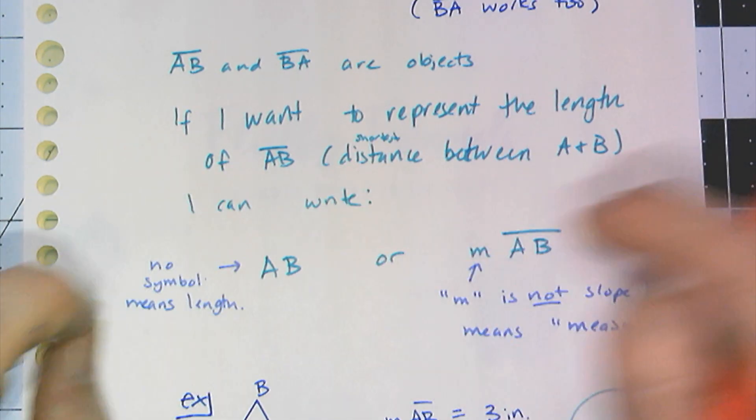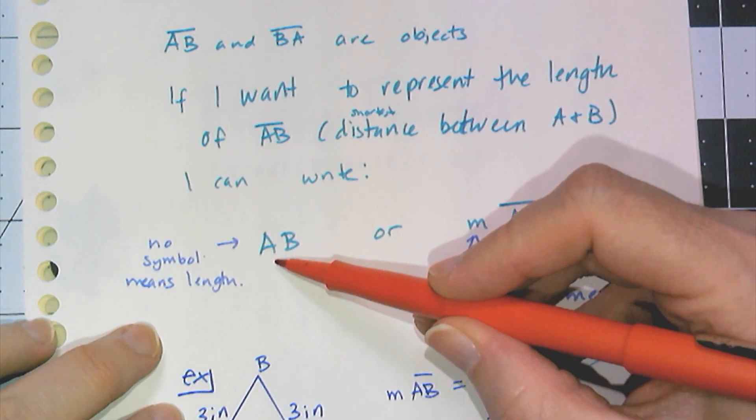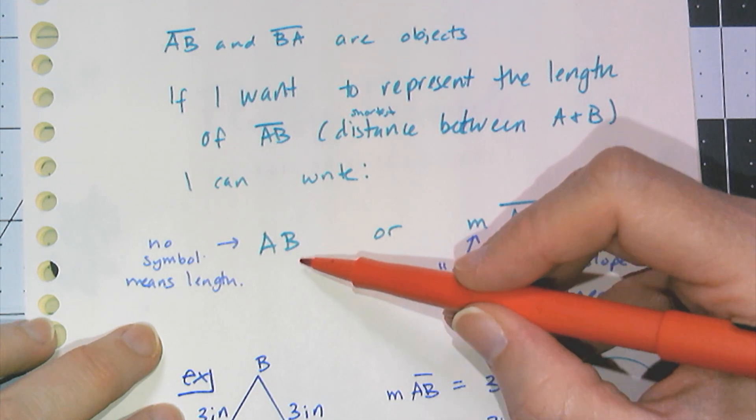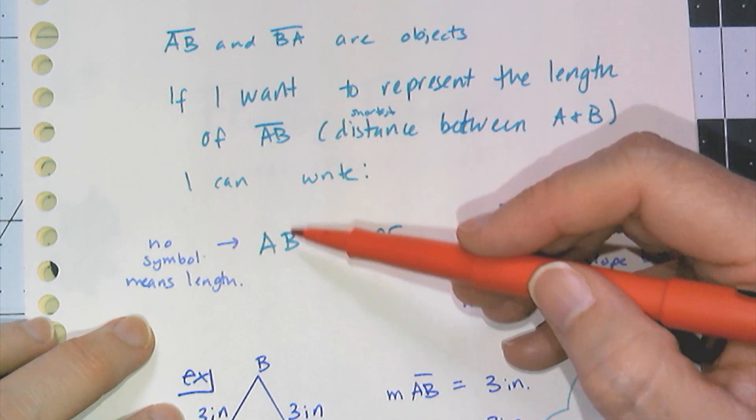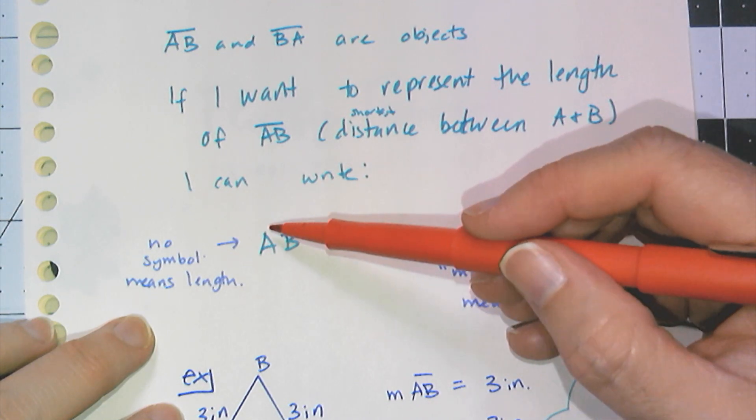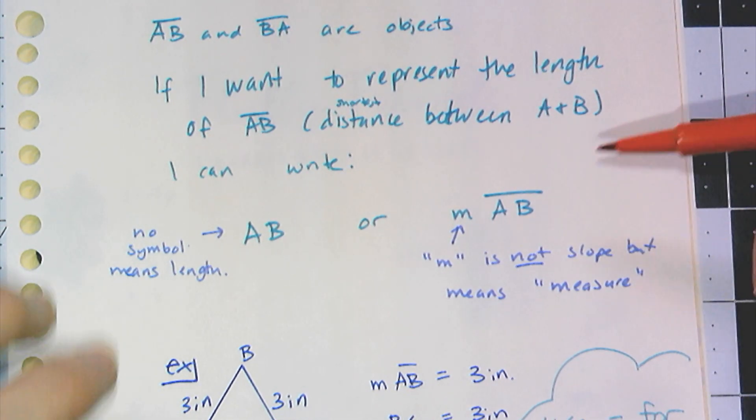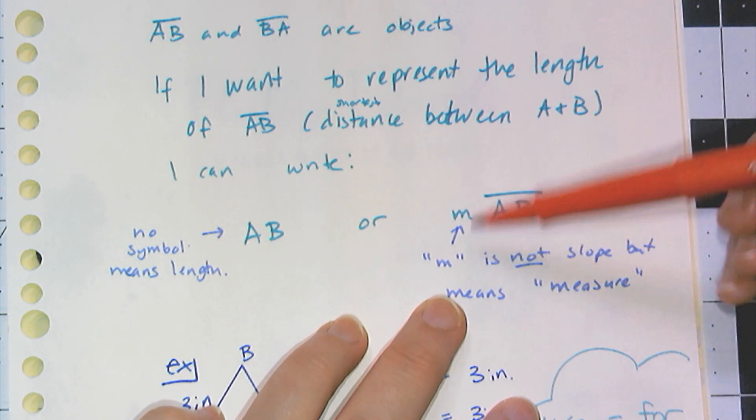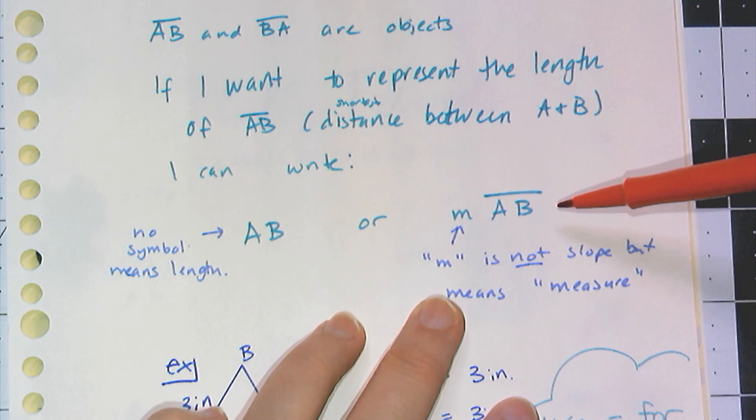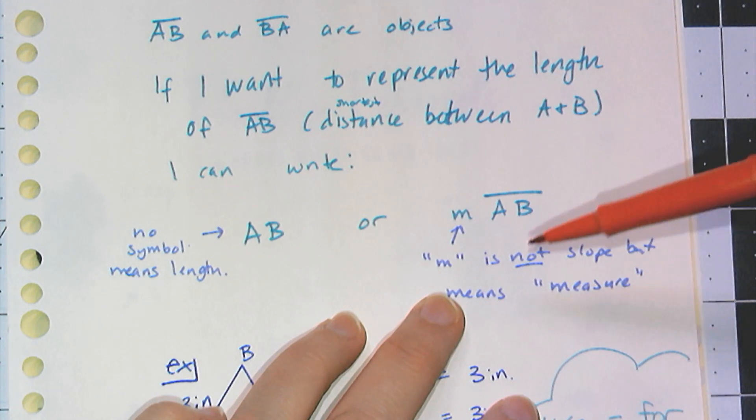If I want to represent the length of AB, which means the shortest distance between the points A and B, I have two ways of writing it. One way is to write the two endpoints with no symbol above it. If there's no symbol, just those two letters, that is geometry shorthand for tell me the distance between points A and B. If I'm talking about a line segment, I can use this little M. In Algebra 1, M represents slope, but in geometry this means the measure of line segment AB. That little M means measure.